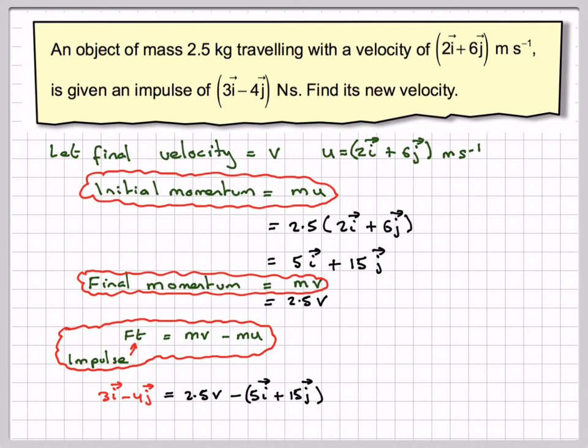Taking everything to this side, we're going to have 8i plus 11j, so that's going to be 3 plus 5 and minus 4 plus 15. We add because we're actually adding it to both sides here.